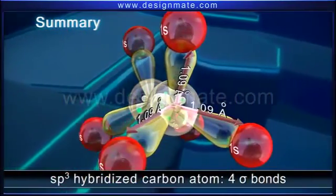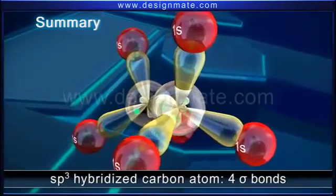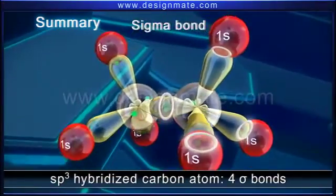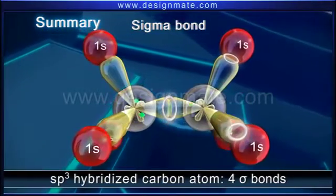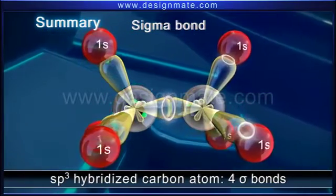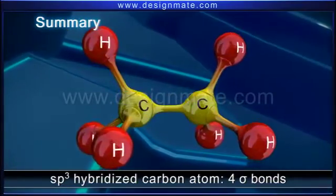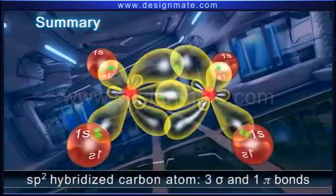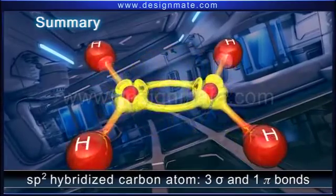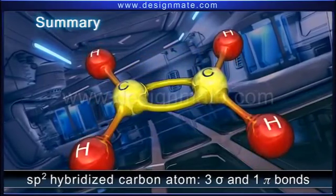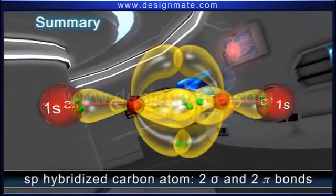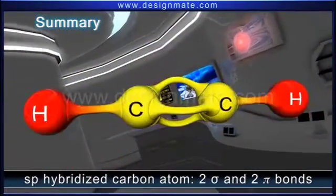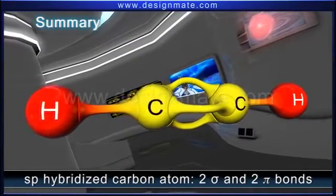To summarize: whenever a carbon atom in an organic compound forms four sigma bonds directed along the corners of a regular tetrahedron, it is sp3 hybridized. A carbon atom that forms three sigma bonds and one pi bond is sp2 hybridized, while one that forms two sigma bonds and two pi bonds is sp hybridized.